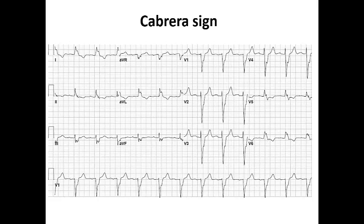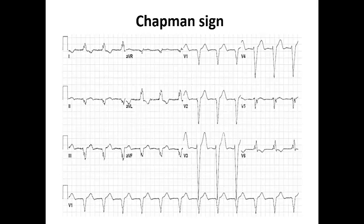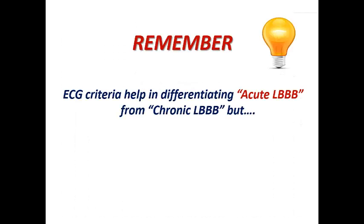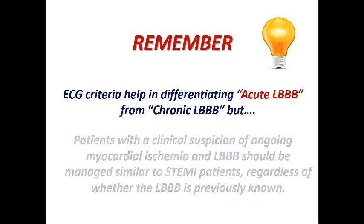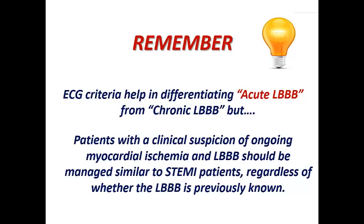There is also the Cabrera sign, which is a notch in the ascending limb in V2, V3, and V4, suggestive of acute LBBB. The Chapman sign is a notch in the ascending limb of the positive complex in leads I, aVL, and V6, also suggestive of acute myocardial infarction. These have low sensitivity as they are not commonly seen, but if present they have high specificity. Remember: ECG criteria help differentiate acute from chronic LBBB, but a patient with clinical suspicion of ongoing infarction and LBBB should be managed as STEMI regardless of whether the bundle branch block was previously known.